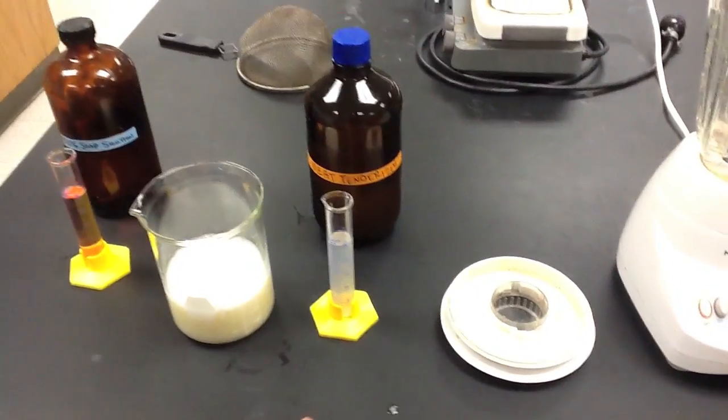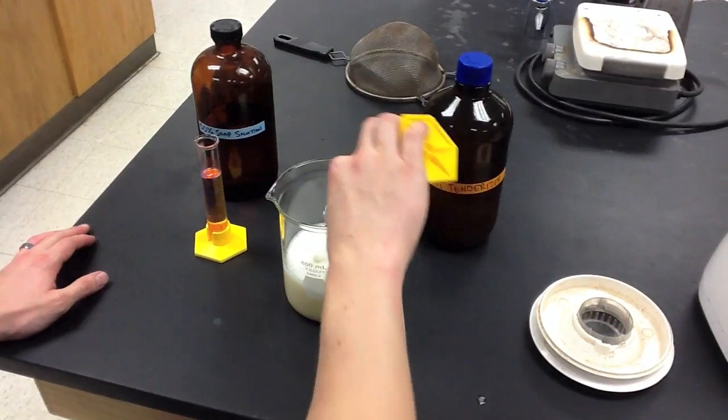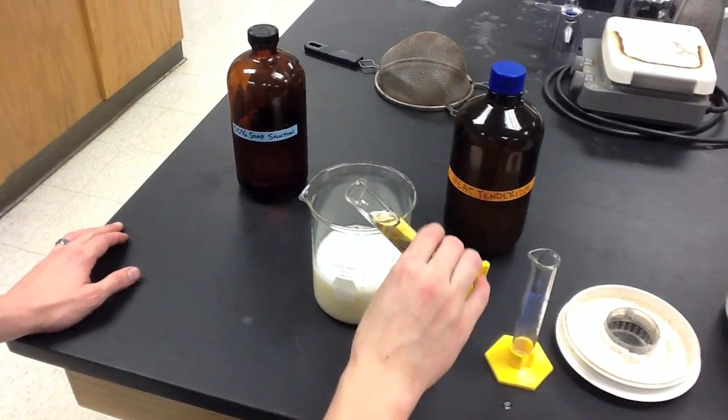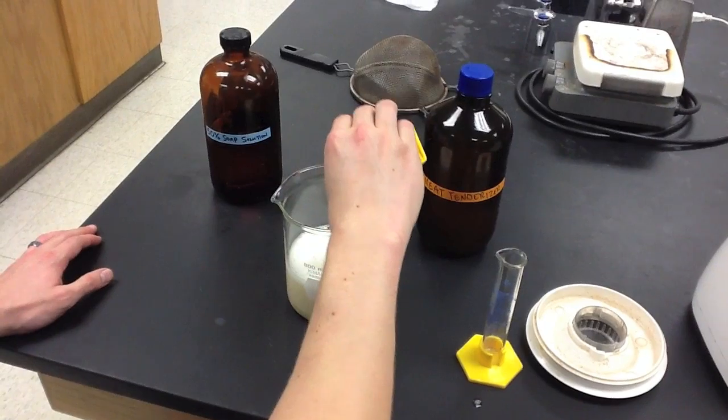Once we had successfully blended the banana, we then added 25 milliliters of meat tenderizer solution and 25 milliliters of 50% soap solution to the mixture.